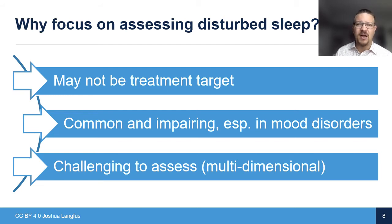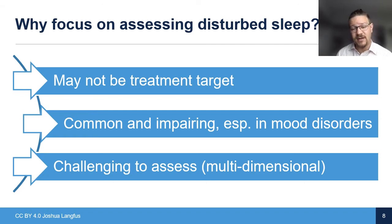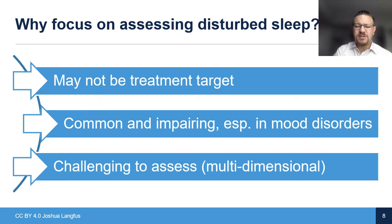Parasomnias like nightmares and nocturnal enuresis can disrupt sleep, so there are lots of different facets that might be clinically relevant. Some work has suggested that there are two dimensions to sleep problems worth paying attention to for clinical purposes. Watson and Caulfill have called these lassitude and insomnia. Lassitude is basically feeling sleepy during the day and needing more sleep, and insomnia is the opposite — having difficulty sleeping, having more energy, or not needing as much sleep. You can see how those might relate to different areas of psychopathology.